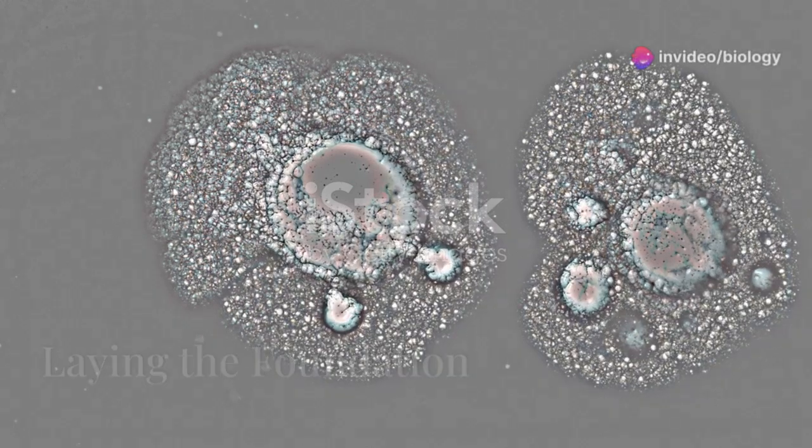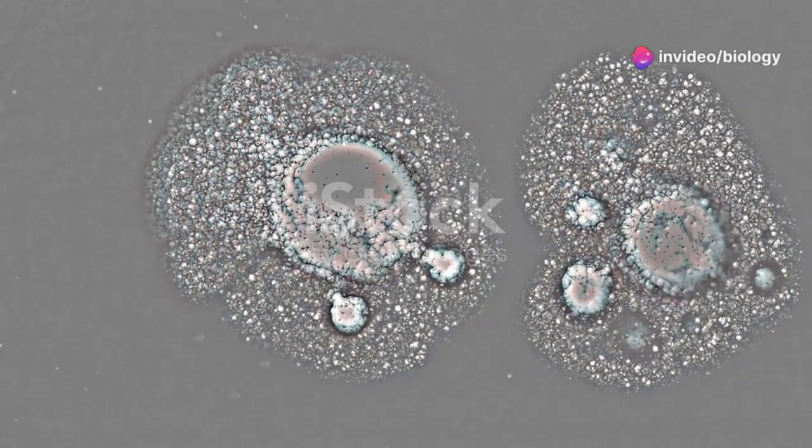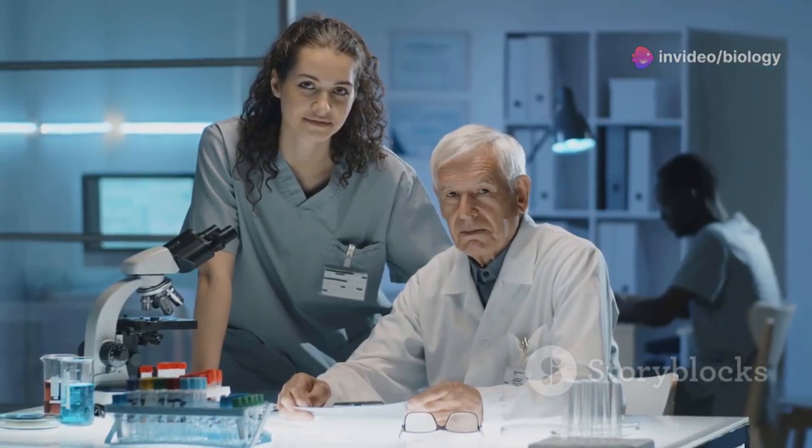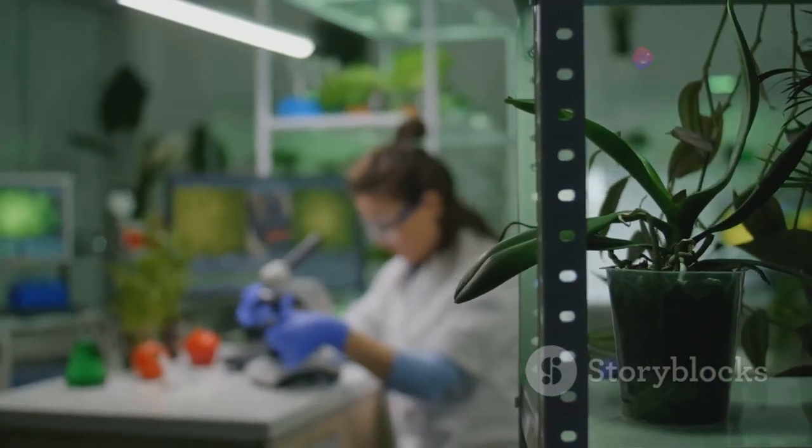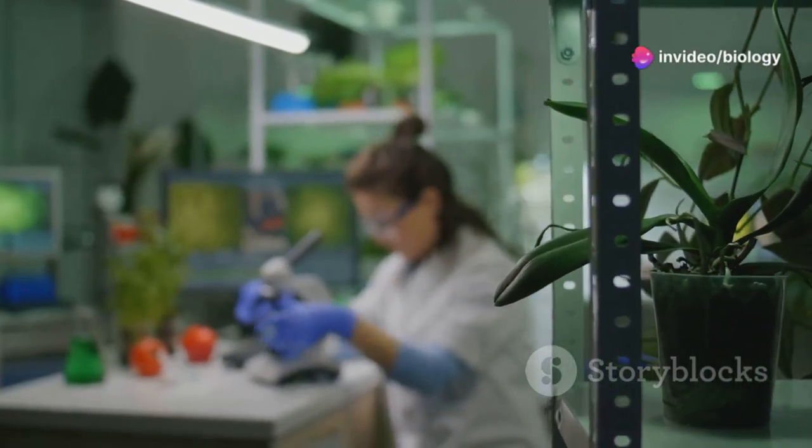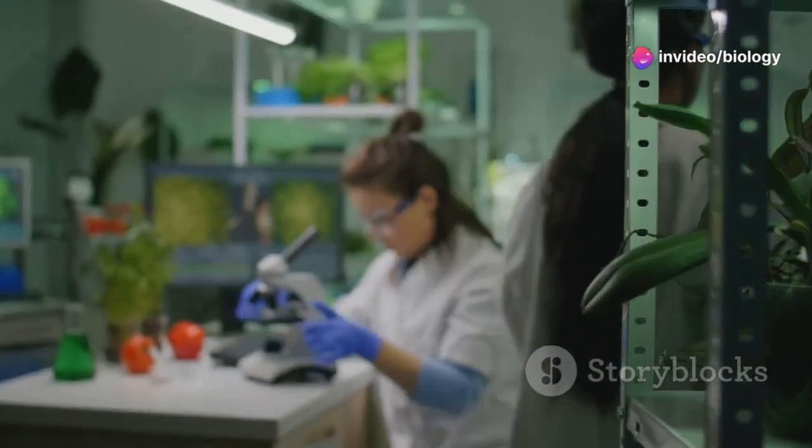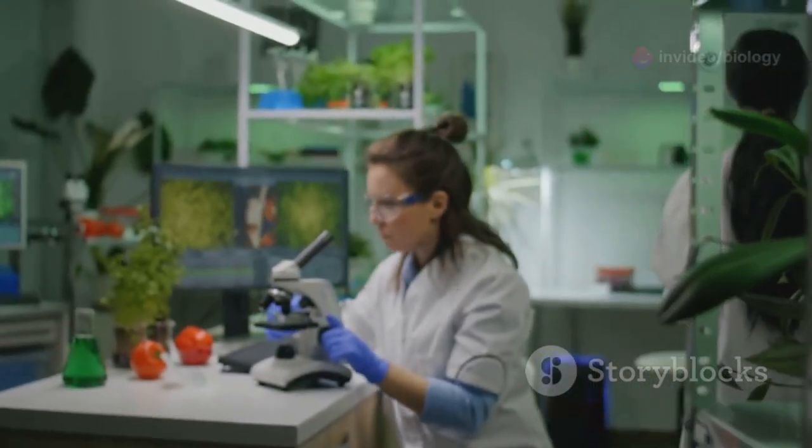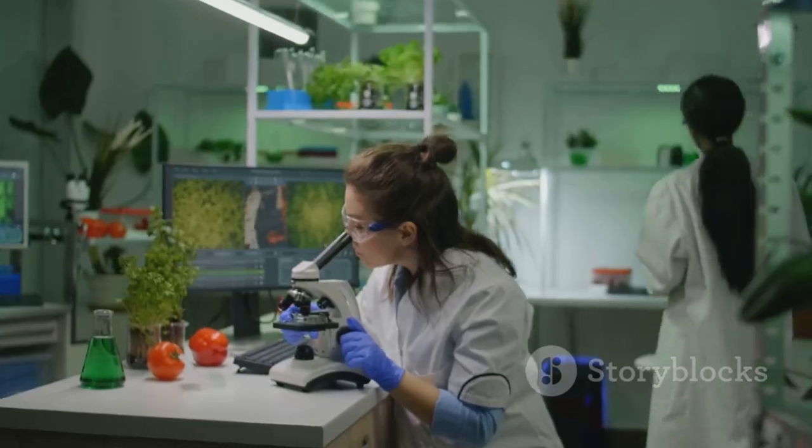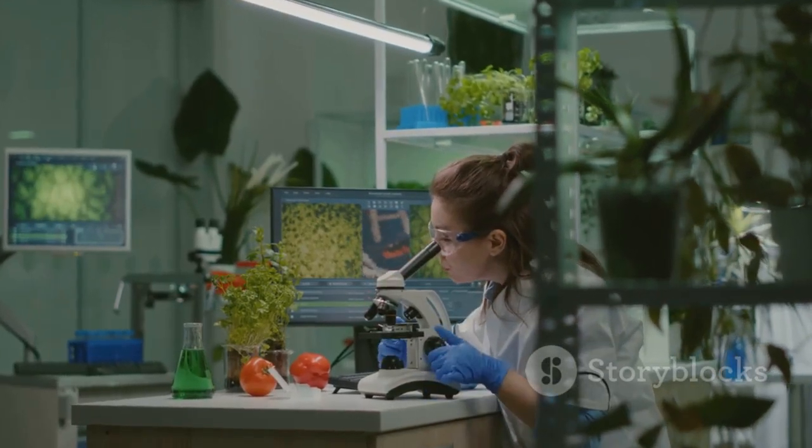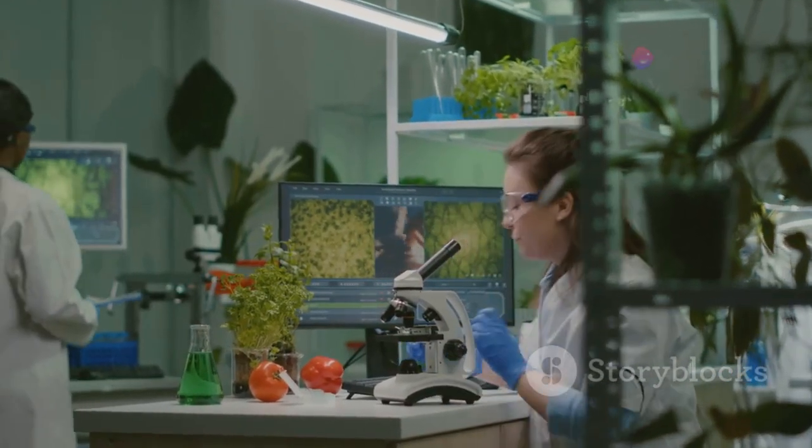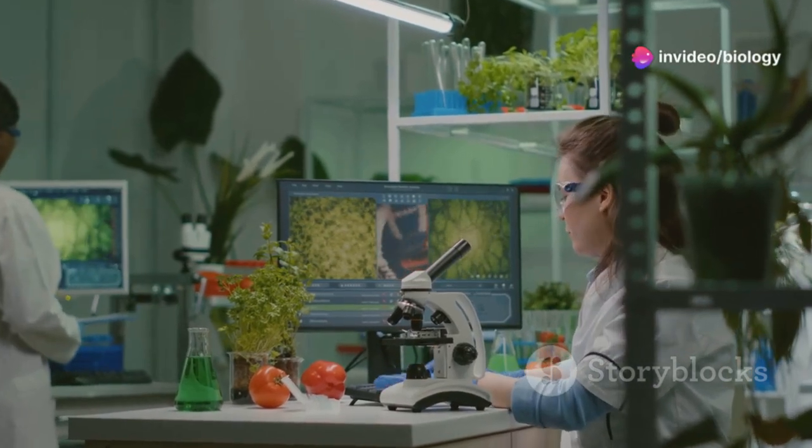Fast forward to the 1800s, where two brilliant scientists Matthias Schleiden and Theodor Schwann entered the scene. These two pioneers were about to change the way we understand life itself. Schleiden was deeply engrossed in studying plants, meticulously observing their intricate structures. On the other hand, Schwann was fascinated by animals, delving into the complexities of their cellular makeup.